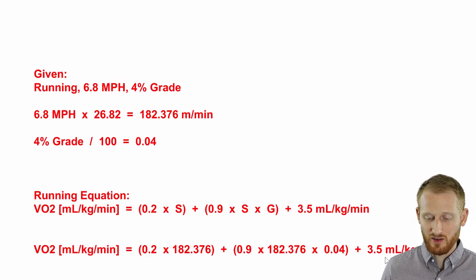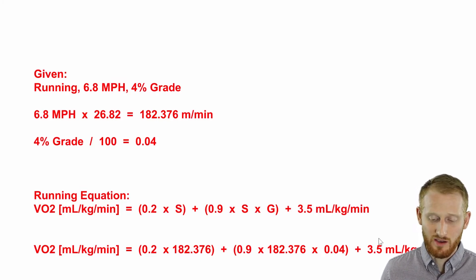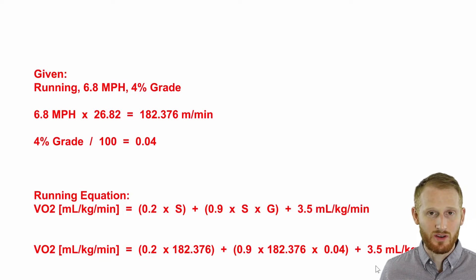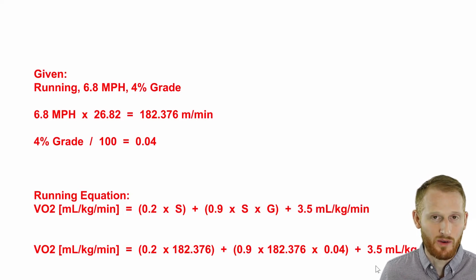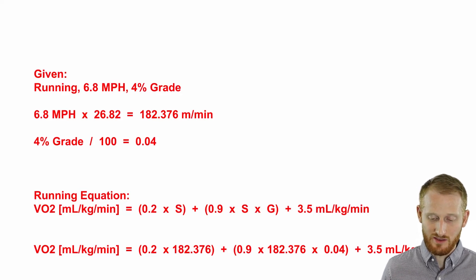in parentheses, plus the 3.5. This 3.5 represents the resting component here. So we rest at 3.5 milliliters per kilogram per minute. So that's why this is here.